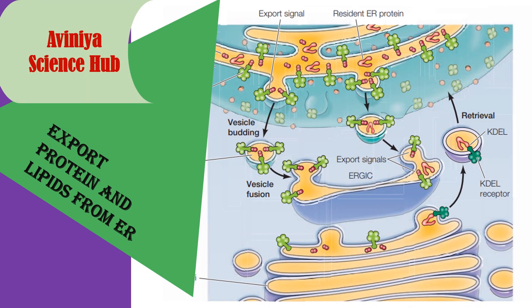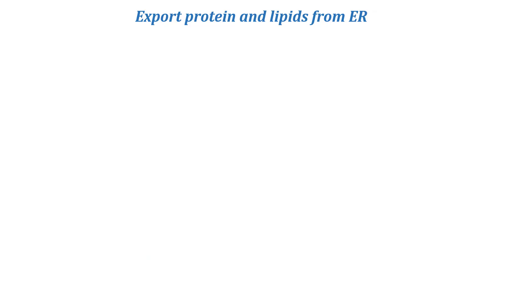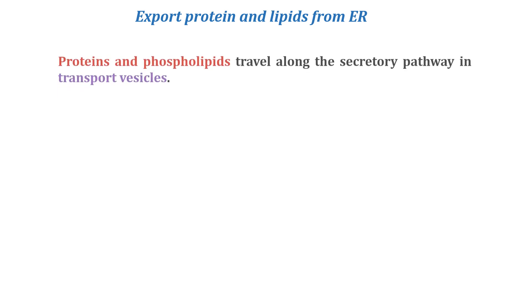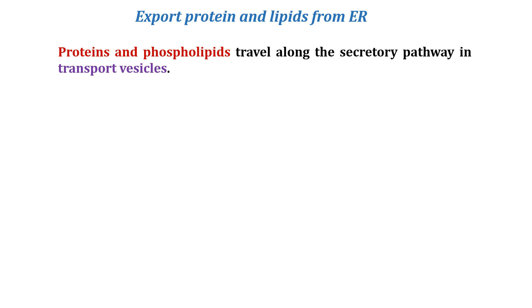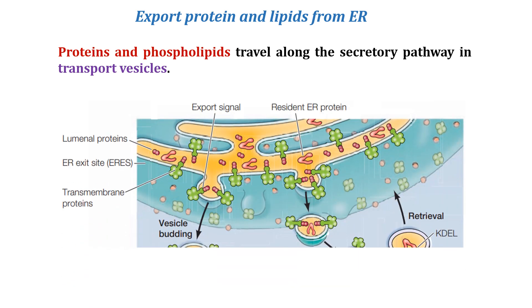Welcome back to my YouTube channel. Today we are talking about how proteins and lipids are exported from the ER. Proteins and lipids travel in small transfer bubbles called vesicles, which are cellular organelles composed of a lipid bilayer used to transport material from one place to another. Proteins and phospholipids both travel along the secretory pathway in transport vesicles.